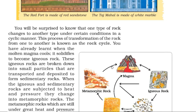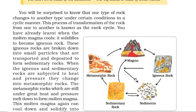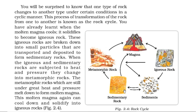One type of rock changes from one type to another under certain conditions in a cyclic manner. This process of transformation of rock from one form to another is known as the rock cycle. When molten magma cools, it solidifies to become igneous rock. Igneous rocks are broken down into smaller particles that are transported and deposited to form sedimentary rocks. When igneous and sedimentary rocks are subjected to heat and pressure, they change into metamorphic rocks. Metamorphic rocks under great heat and pressure melt down to form magma again, which can cool and solidify into igneous rock — this whole cycle is called the rock cycle.